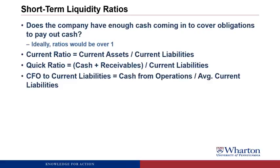Then we have cash from operations to current liabilities: cash from operations divided by average current liabilities. This is more backward-looking, asking whether in the period we generated enough cash from operations to cover our normal level of current liabilities. If so, that's a good sign going forward that we have enough liquidity.